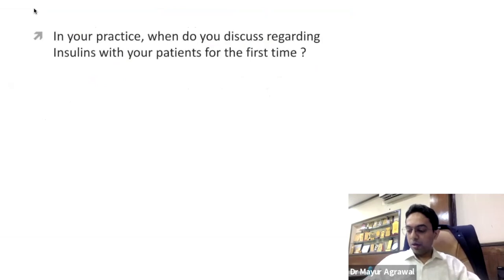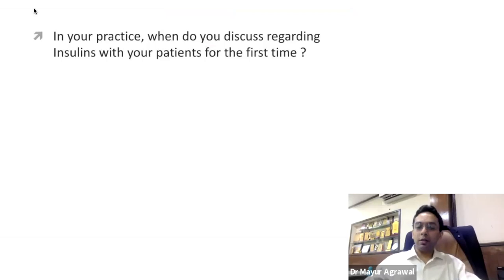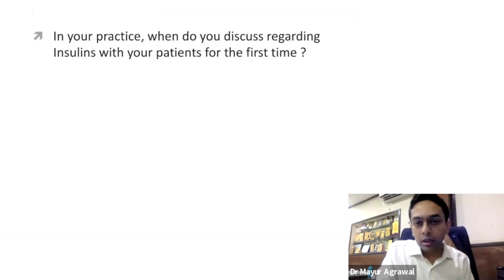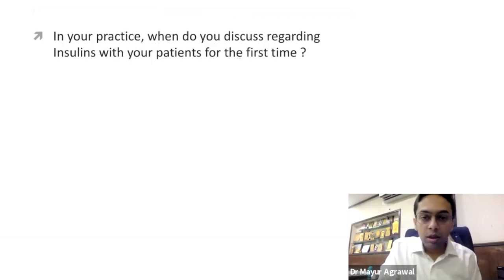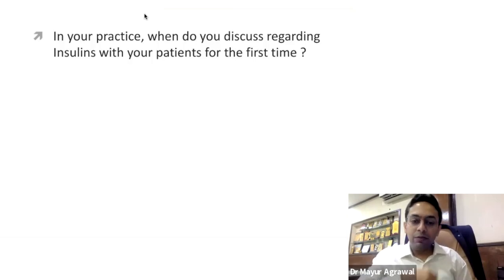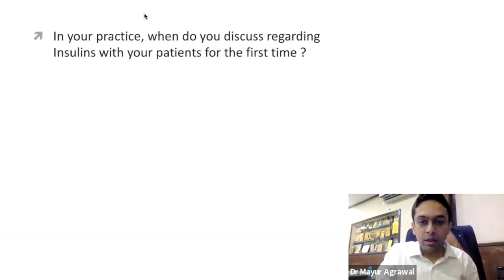An important open question: in your practice, when do you actually first discuss insulin with your patient? Obviously the patient may be newly diagnosed — so when do you actually discuss it? You can answer on the chat. We have one answer: when sugars are not controlled with three OHAs, then we should discuss insulin.